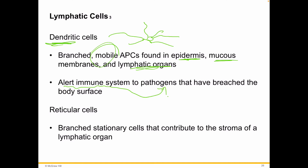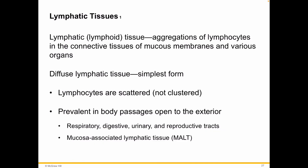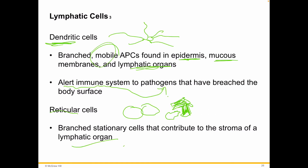Dendritic cells alert the immune system to certain types of pathogens that have breached the body surface, making them some of the most important teacher cells. Reticular cells — think of a reticulated giraffe or reticulated python, that interlocking shape — are stationary cells that contribute to the stroma of the lymphatic organs themselves, forming part of the overall matrix.